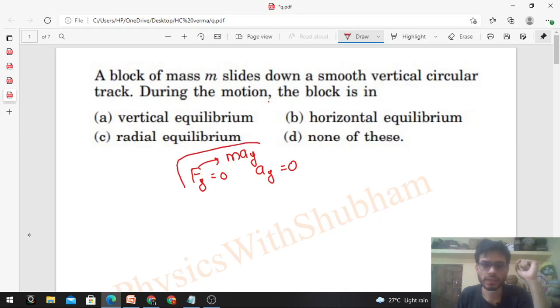If we talk about the y direction, net force in y direction will be equal to mass into acceleration of the particle in y direction. So if net force is zero on the particle, acceleration of the particle in that direction will be zero. Right? So when any particle moves in a circular path, something like this—the particle is moving in a circle—you check whether the particle's acceleration in that direction is zero, the direction in which you need to check equilibrium.